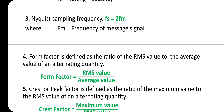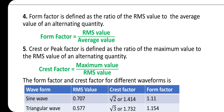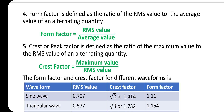Form factor is defined as the ratio of the RMS value to the average value of an alternating quantity: Form factor = RMS value / average value. Crest or peak factor is defined as the ratio of the maximum value to the RMS value of an alternating quantity: Crest factor = maximum value / RMS value.